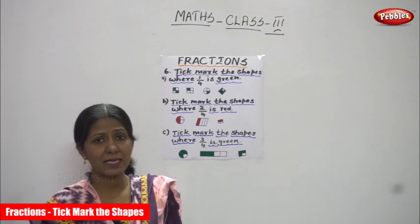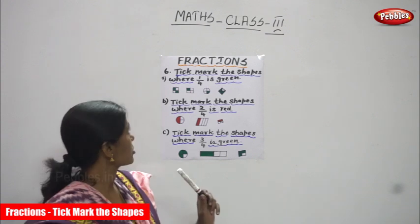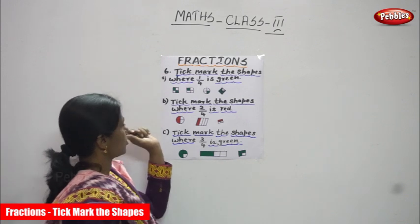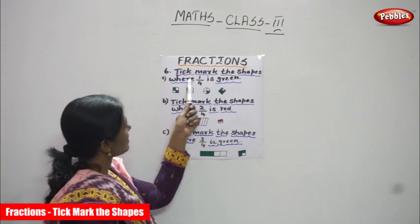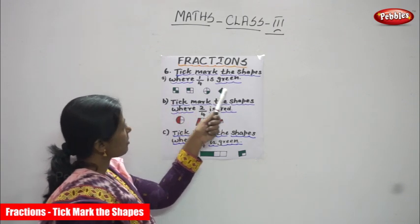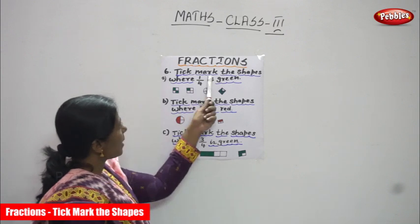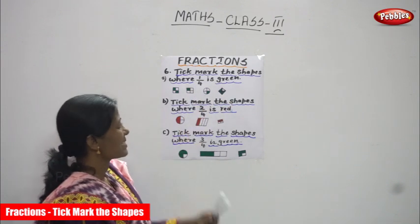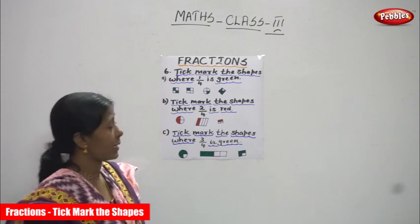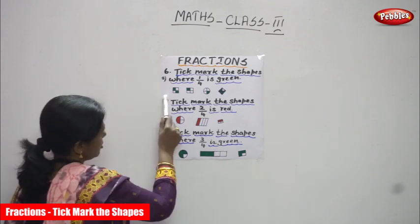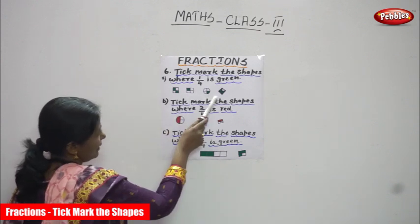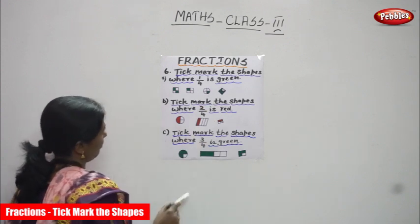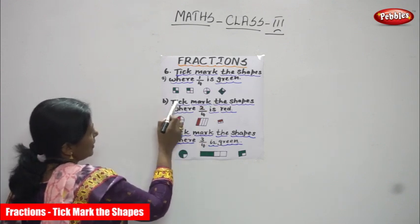Hi, welcome everyone. In today's class we are going to see fractions, Roman number six. Tick mark the shapes where one by four is green. Look at the diagrams — there is a square, another square, a circle, and a diamond shape.